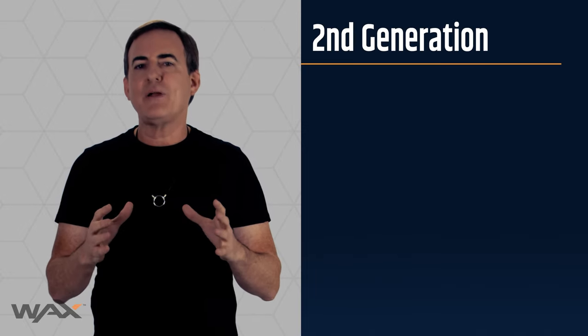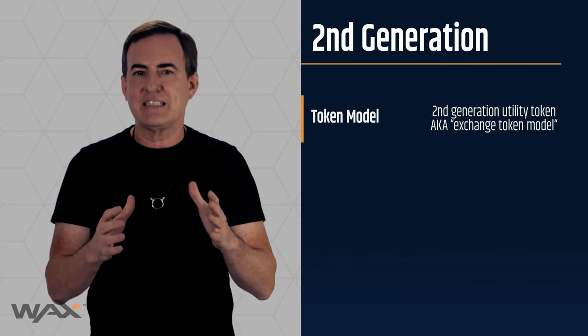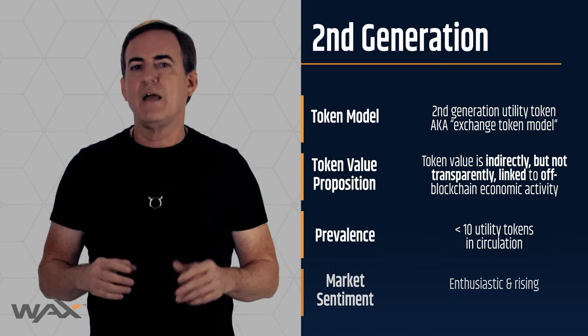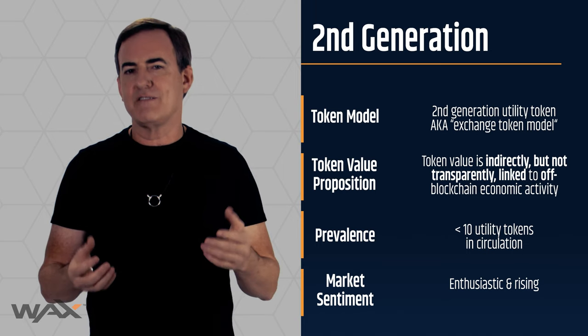It's 2020 now and market sentiment is waning on this concept. This is one reason utility tokens have declined so much from the ICO mania of 2017. In 2019, we saw the first signs that the second generation utility token model had arrived. A second generation utility token is where the token is finally linked, albeit indirectly, to off-blockchain economic activity. The Binance token would be a good example of this.